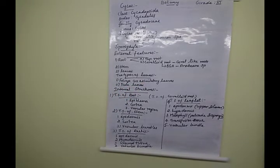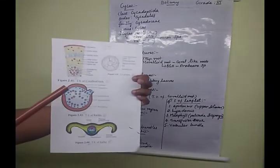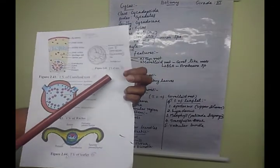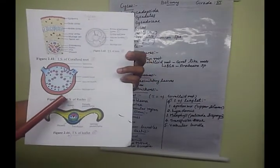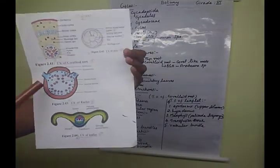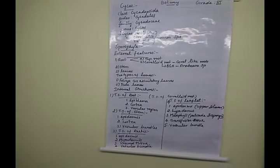Next we are going to learn about the internal structure of the Cycas plant. The four important transverse sections are: the coralloid root TS, the stem TS, the rachis TS, and the leaf TS. These four questions are very important. Each question will have a diagram with explanation.